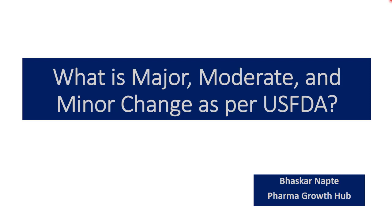Hello and welcome. This is Bhaskar Naptev from Pharma Growth Hub. As part of this video, we are trying to understand how to make post-approval changes into the US market — what is meant by major change, moderate change, and minor change. The applicant must notify USFDA about each change in each condition established in an approved NDA or ANDA, and must assess the effect of this change before distributing a drug product made with a manufacturing change. Let us understand what are the types of changes, the examples, and how to notify the USFDA.